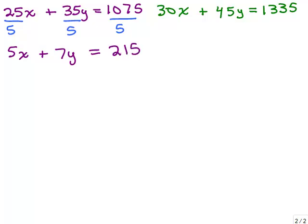I'm also going to divide in the other equation everything by 5. 5 happened to go into all of these numbers as well. So when I divide the second equation, each term by 5, I get 6X plus 9Y equals 267.